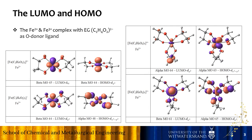Here are the HOMO and LUMO for iron 2 and iron 3 with ethylene glycol as an O-donor ligand. On the left-hand side, you see the iron complex with two ethylene glycol in a tetrahedral form. And on the right-hand side is iron with three ethylene glycol in an octahedral complex.